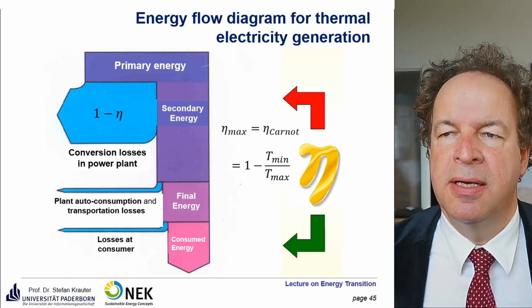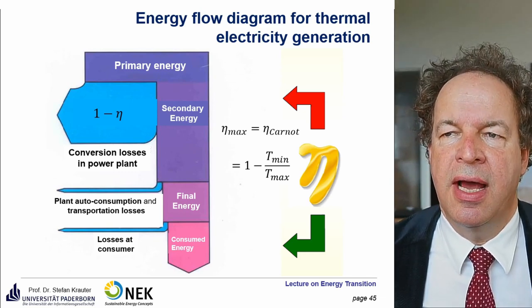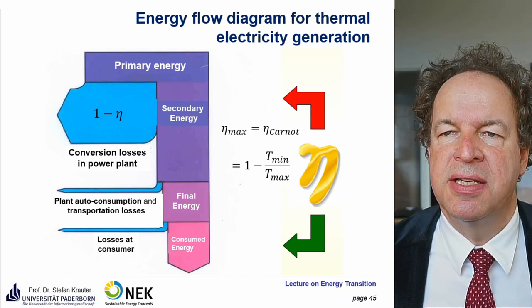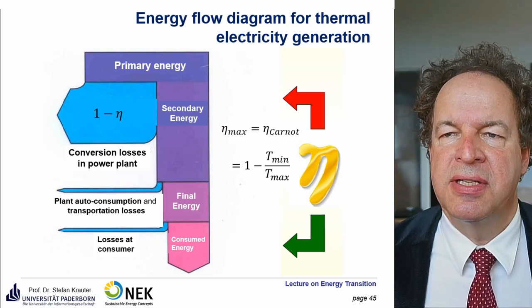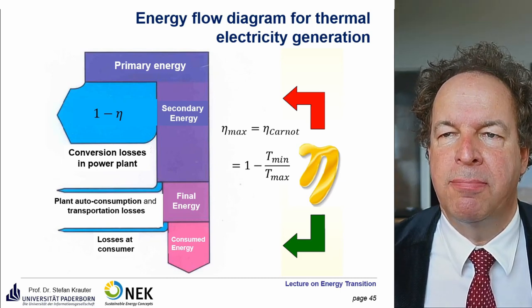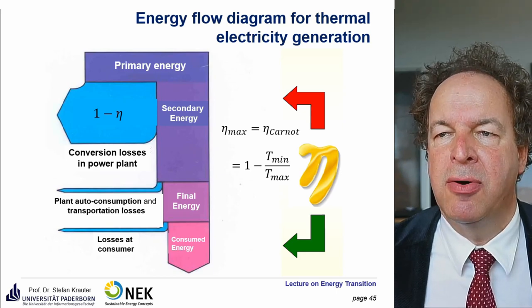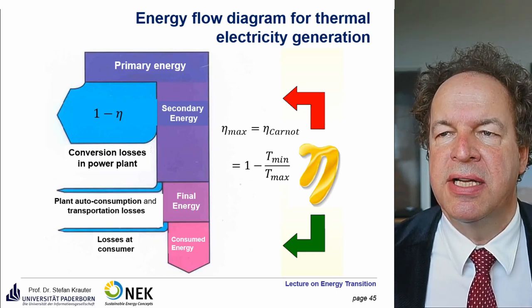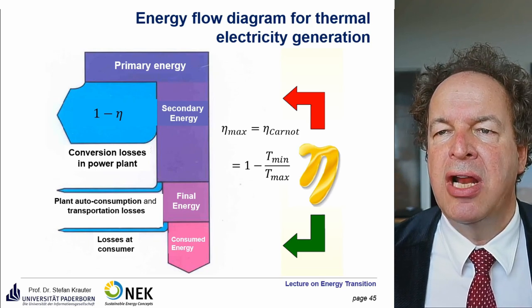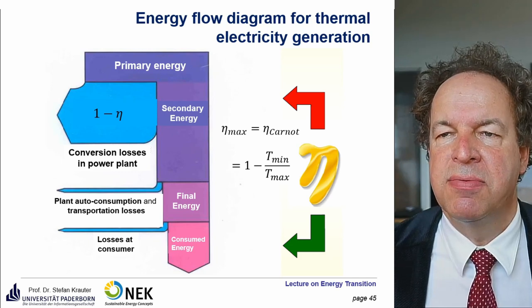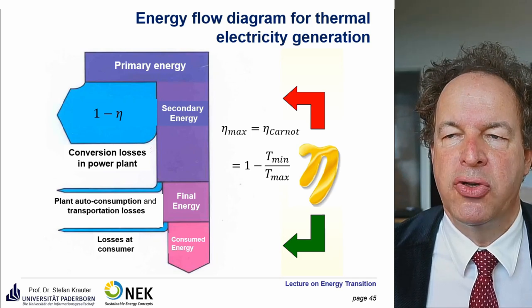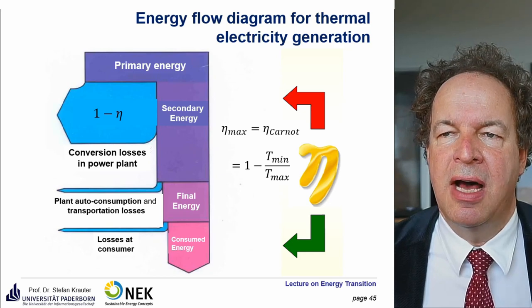The maximum conversion efficiency at thermodynamic machines is given by the Carnot efficiency: η = 1 − T_min / T_max. The higher the difference between minimum and maximum temperature, the closer efficiency is to one. If you have a really high maximum temperature, T_min / T_max is very small and conversion efficiency approaches one. But usually this is quite limited, and therefore the conversion efficiency of thermal power plants is quite low.